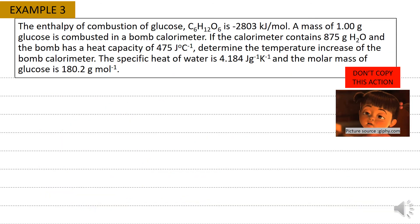Example 3: Given delta H for glucose combustion is negative 2803 kilojoules per mole, and the mass of glucose is 1 gram. Glucose is burned in a bomb calorimeter, so Q-reaction equals negative of (Q-solution plus Q-calorimeter). The calorimeter contains 875 grams of water and the bomb has a heat capacity of 4.75 kilojoules per degree C. Find the temperature increase, delta T, given specific heat of water and molar mass of glucose.